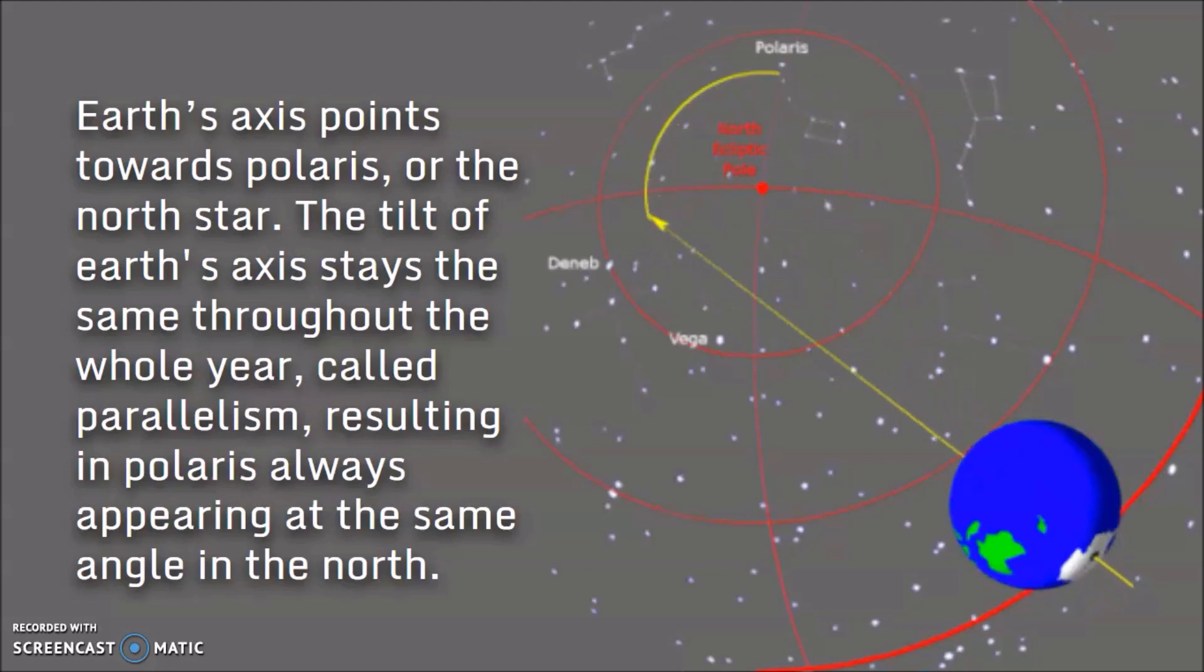However, the tilt of Earth's axis will stay the same throughout the whole year, and this is called parallelism. Because of this, Polaris is always going to appear in the same place in the northern hemisphere.